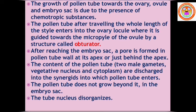The pollen tube travels the whole length of the style. There are three different types of styles: open or hollow type, solid or closed type, and semi-solid or half-hollow type. After traveling the style, the pollen tube enters the ovary locule, where it is guided to the micropyle of the ovule by a structure called the obturator.